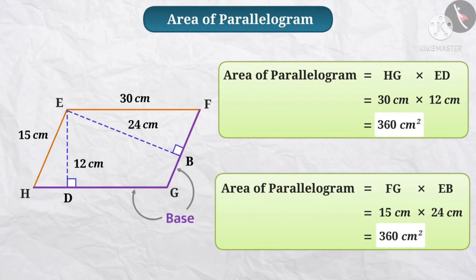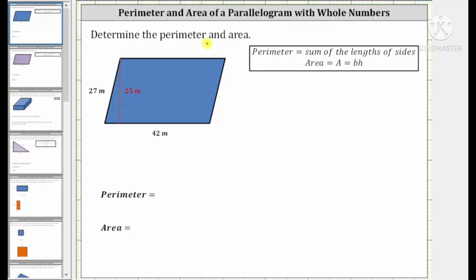So, in one parallelogram, we have two bases and two heights. From either pair, we can find the area of the parallelogram. Next, from one figure we have to find both the perimeter and area. You know that perimeter is equal to the sum of the lengths of the sides, and area is equal to base into height.